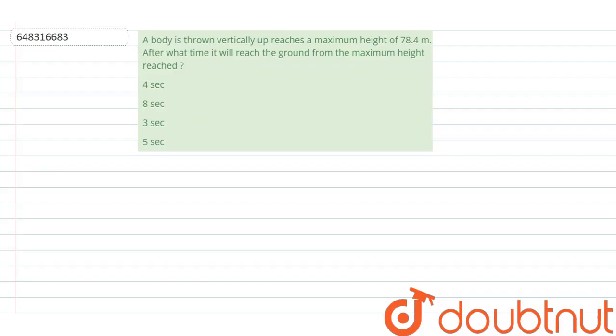it is given that a body is thrown vertically up and reaches a maximum height of 78.4 meters. After what time will it reach the ground from the maximum height? So here you need to find out the time taken to reach the ground from the maximum height.